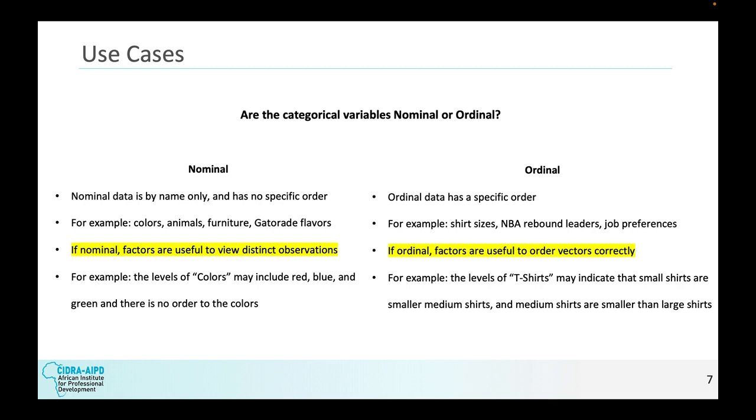In terms of nominal variables, it's by name only, no specific order. Is red better than blue? Maybe to you, maybe subjectively, but objectively they are pretty similar. They're just colors. Animals, furniture, Gatorade flavors, they're just things that don't have a guaranteed specific order objectively. So if nominal, factors are useful to view distinct observations. So if we had a vector of colors, as we'll see later, they may include red, blue, and green, but there's no order to the colors because there is no preference in nature.